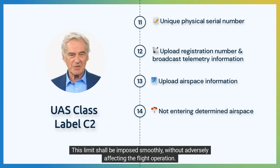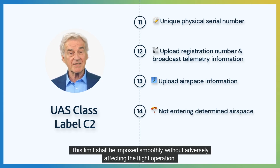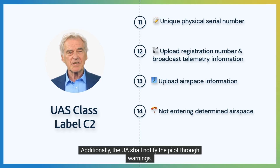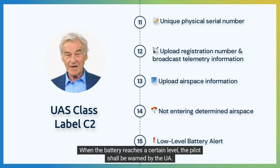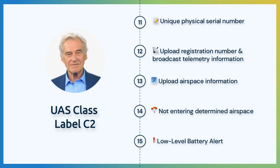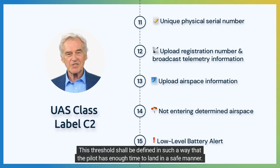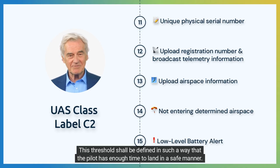Entering determined airspace shall not be possible for the UA. This limit shall be imposed smoothly without adversely affecting the flight operation. Additionally, the UA shall notify the pilot through warnings. When the battery reaches a certain level, the pilot shall be warned by the UA.